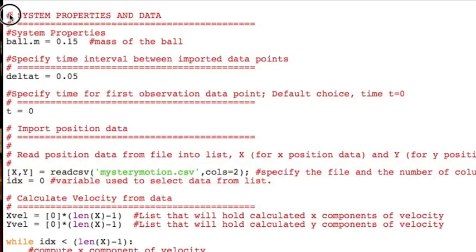To do this now, we first need to insert the system and motion information we already know into the program. Here we put in the system's mass, the time between the observed position data points delta t, and the starting time for the observation.